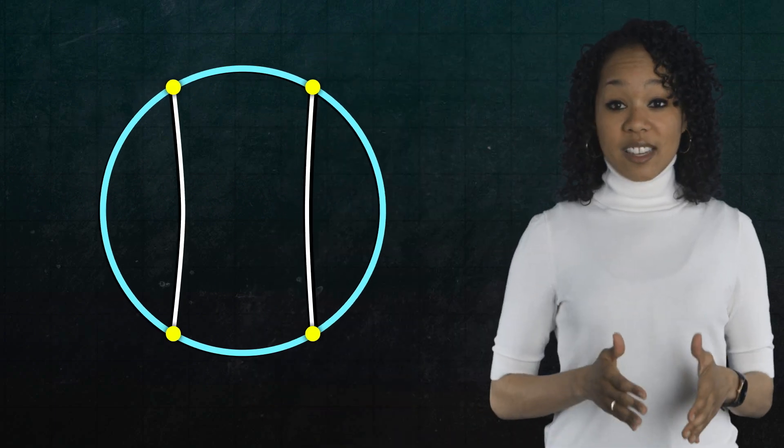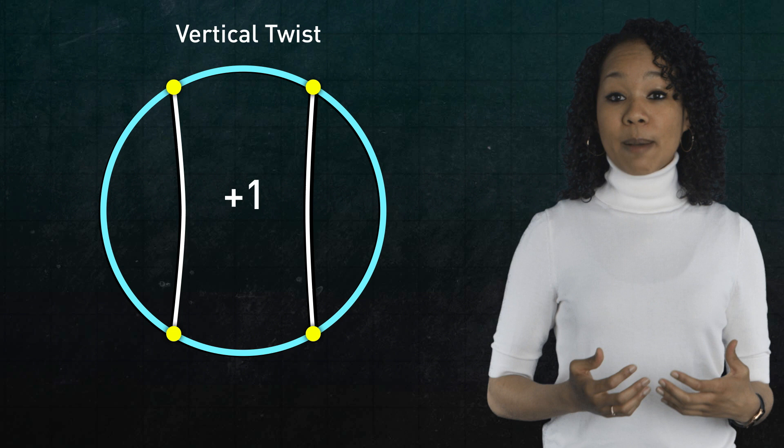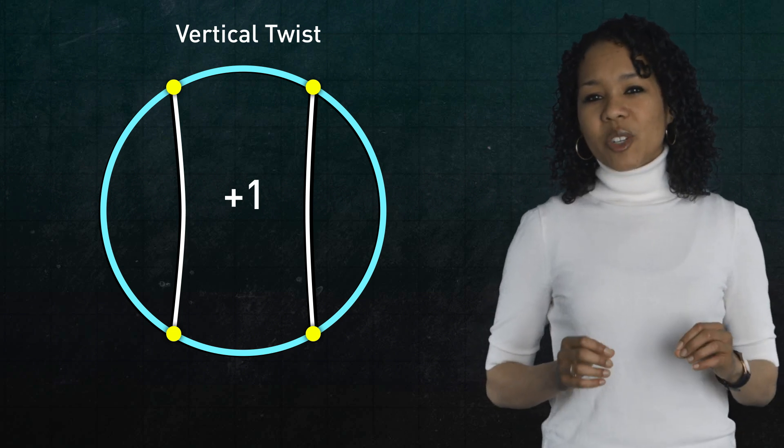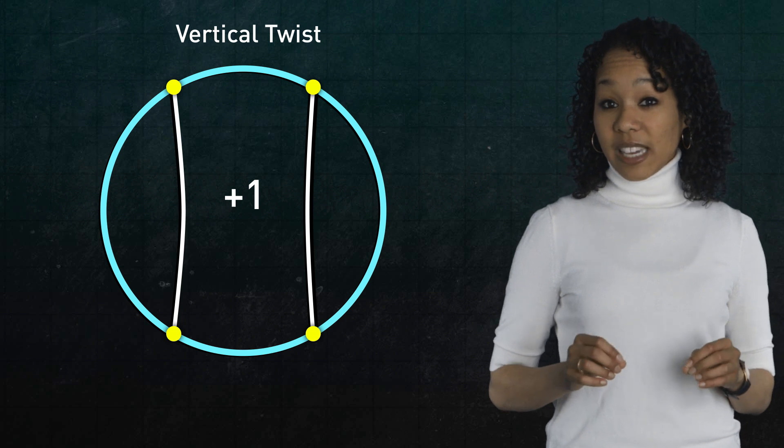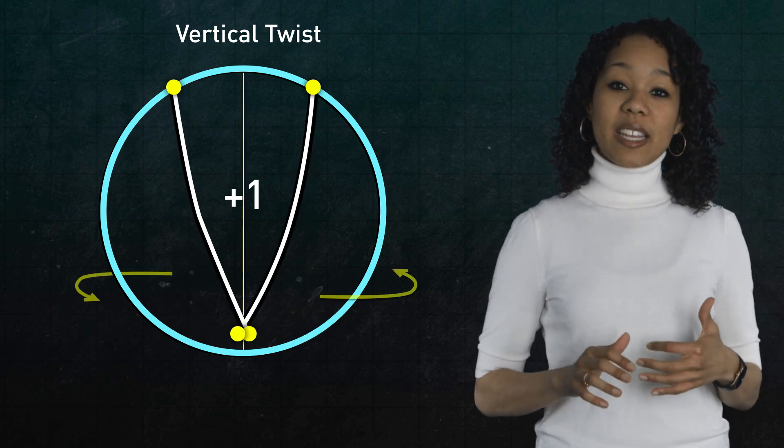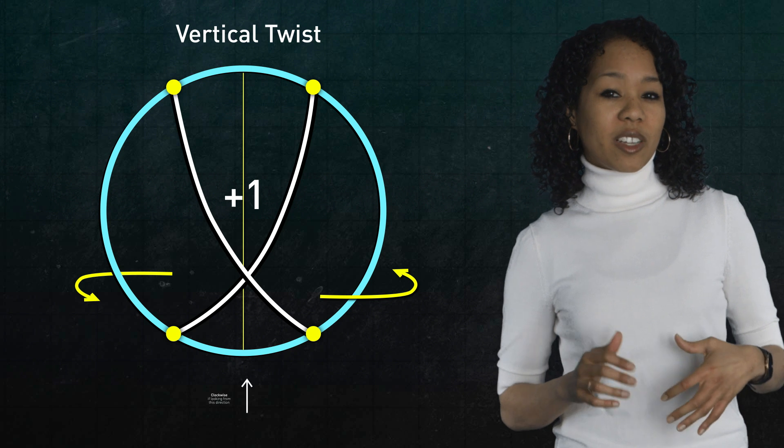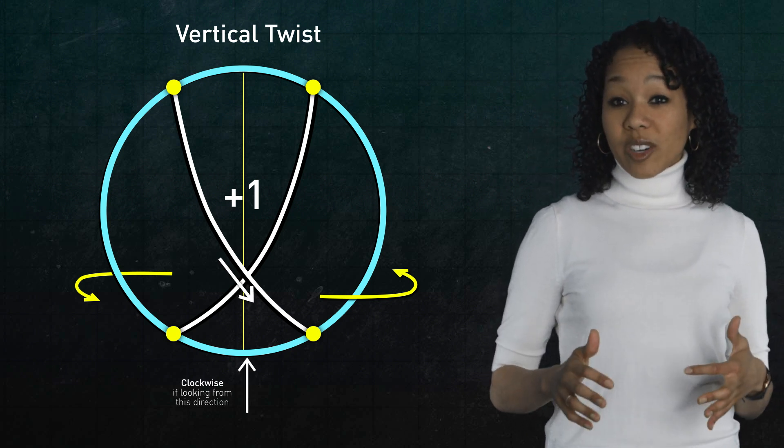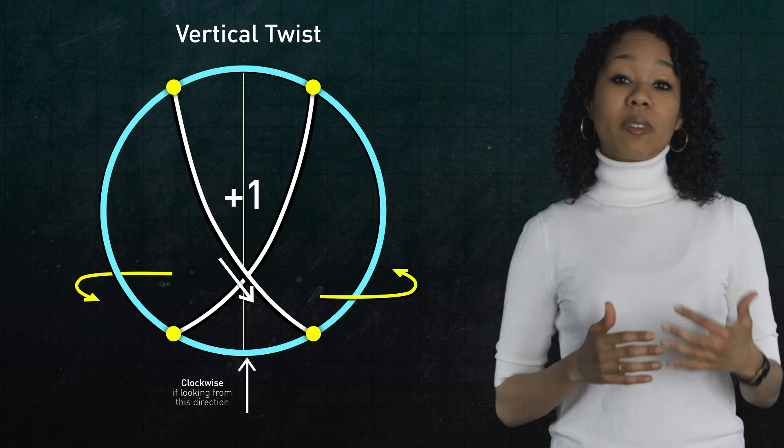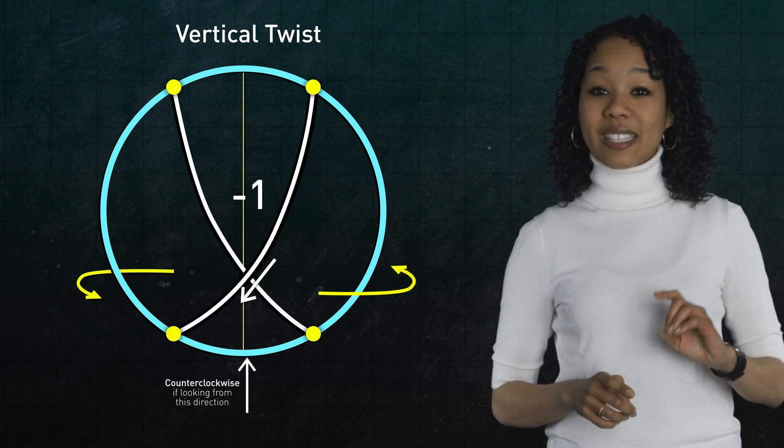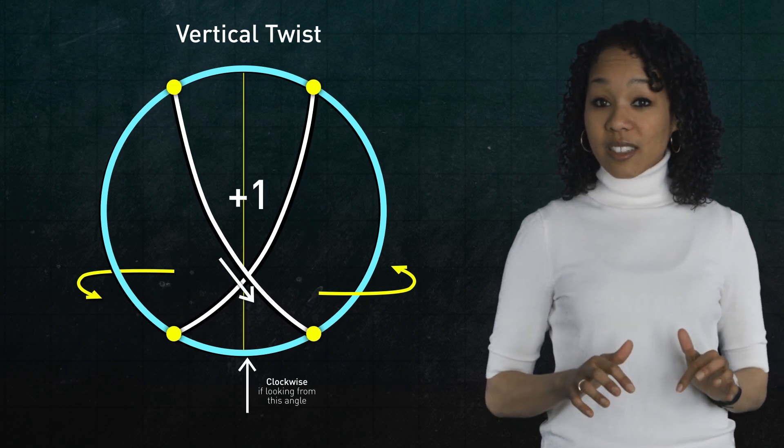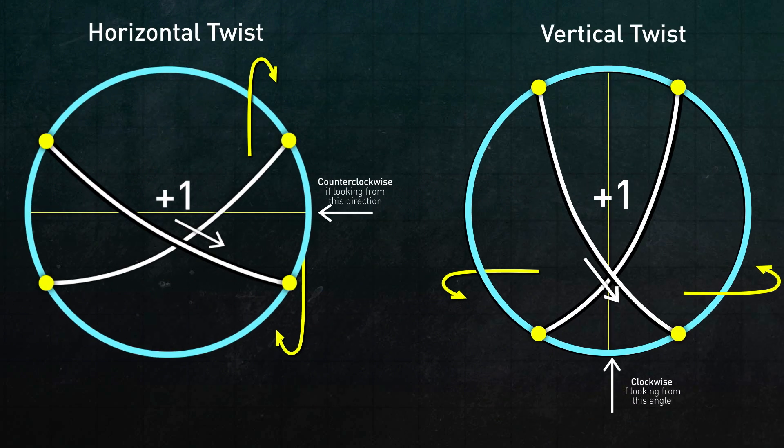Now, for the second move, if your strings are positioned like this, then we can twist vertically and pick up a plus one again. By vertically, I mean, imagine holding the tops of the strings in place while twisting the bottom ends around each other, say clockwise if we're looking up at it this way. Notice that the left string goes over. Again, this corresponds to plus one or minus one if we twist counterclockwise. Let's call this one a vertical twist and the previous twist a horizontal twist.